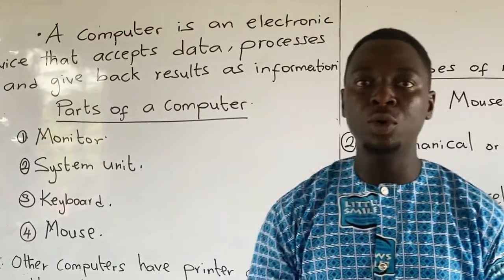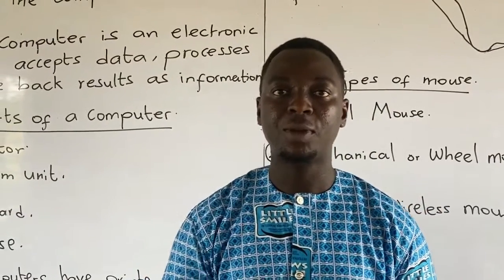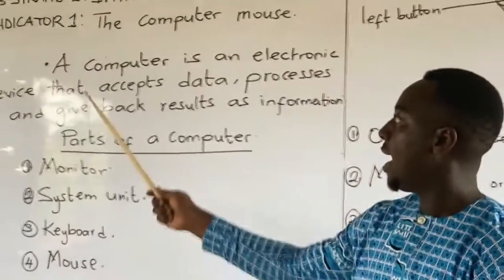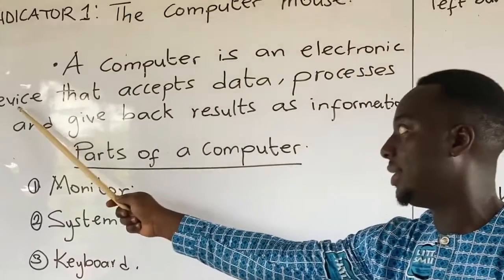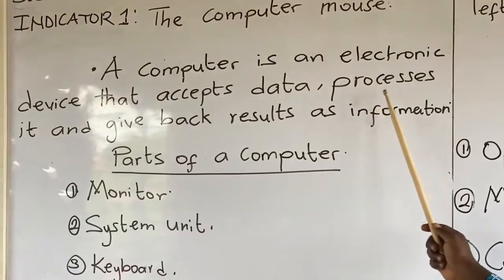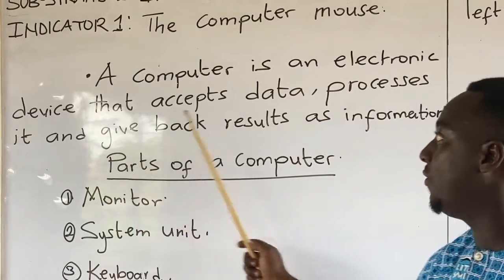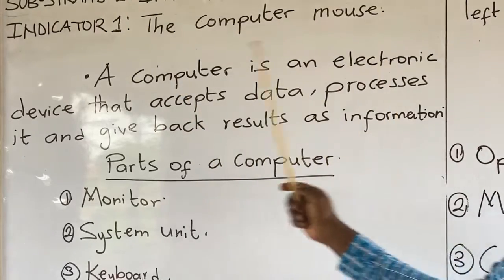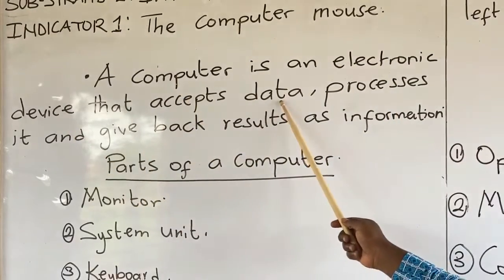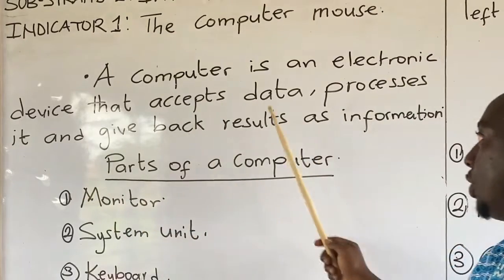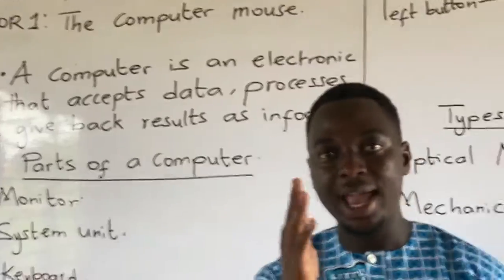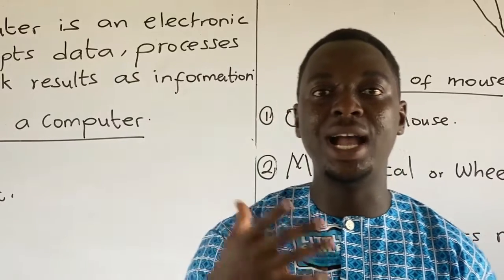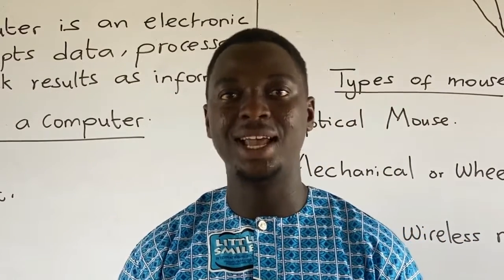In this lesson, we will look at the computer mouse. But before that, let's remind ourselves — what is a computer? A computer is an electronic device that accesses data, processes it, and gives back results as information. So any machine that is able to access data, process it, and bring back information is termed as a computer.